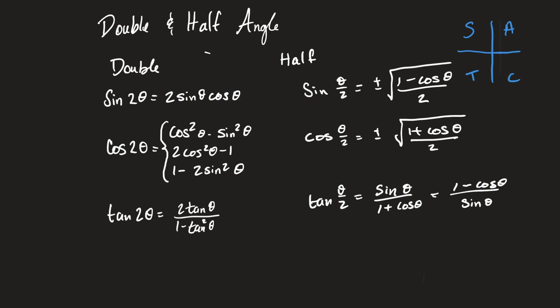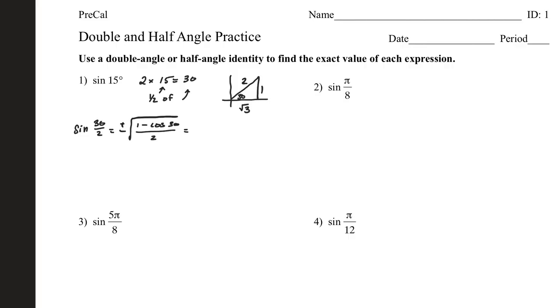Let's do some examples. For number one what we're going to look at is sine of 15 and I've been asked to use a double or half angle identity. I'm going to choose to use the half angle which is most common. I doubled this 15 to get something that we're familiar with so I'm going to draw that angle.